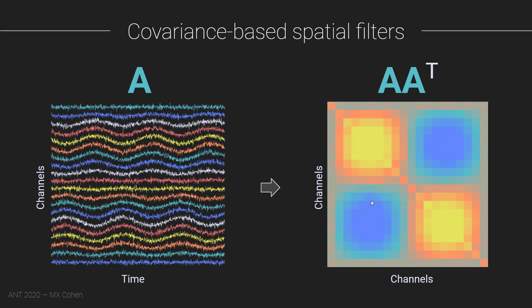Covariance matrices are great because they contain a lot of information in a very compact representation — all of the linear pairwise interactions across the entire dataset. You might think that 'linear is stupid because the brain has all sorts of nonlinear things,' and that is true. But covariance matrices limited to linear features are not necessarily a bad thing. We are not limiting our data analyses to linear methods — we can still apply nonlinear analyses. It's just the way of mixing the different channels together that is linear. Linear filters are also generally very fast, reliable, and easy to compute, with good numerical stability properties.